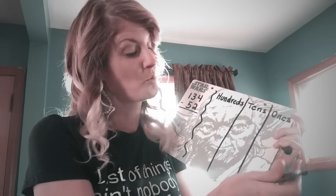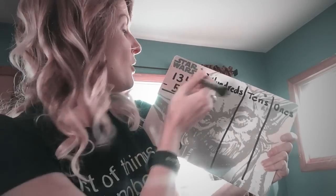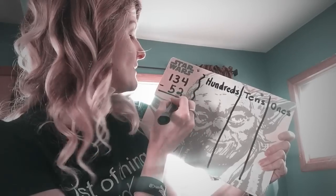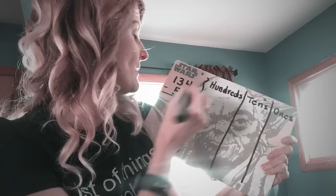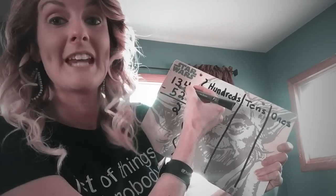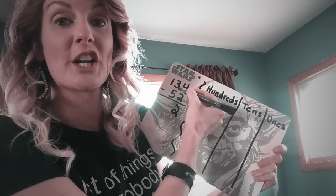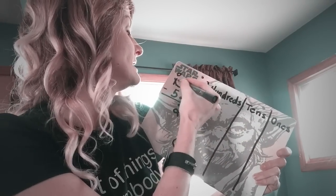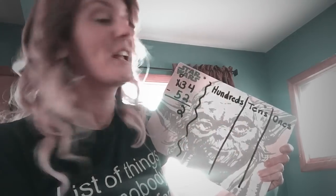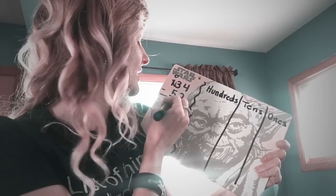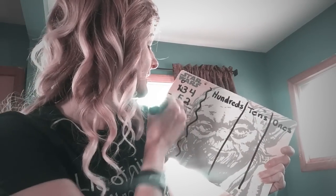First and foremost, we are going to solve this subtraction problem the way that you and I know how to solve it. We have 134 minus 52. Four minus two gives us two. Three minus five we can't do, so we're going to go ahead and borrow from the one. That makes it thirteen minus five, which gives us our answer of eighty-two.